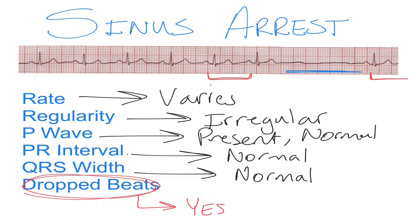So if you have a rate that varies, an irregular rhythm, P waves, PR interval, and QRS that are all normal, and you have some dropped beats followed by a P2P interval that is not the same after the pause as before, there's a pretty good chance you're looking at sinus arrest.